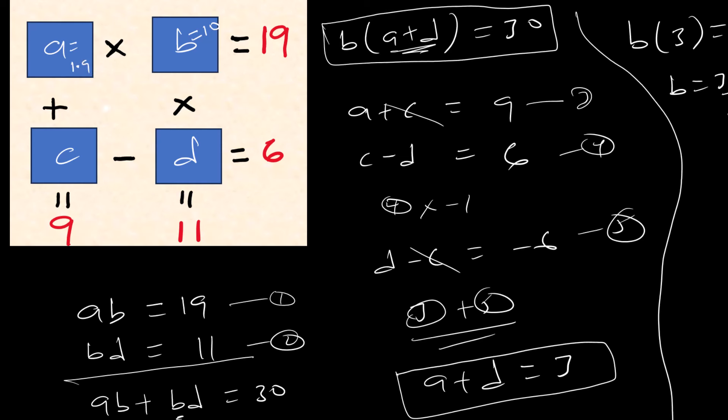Okay, so 1.9 plus what value is 9? So this side will be 7.1. Okay, so 7.1 minus what value gives us 6? So 1.1.